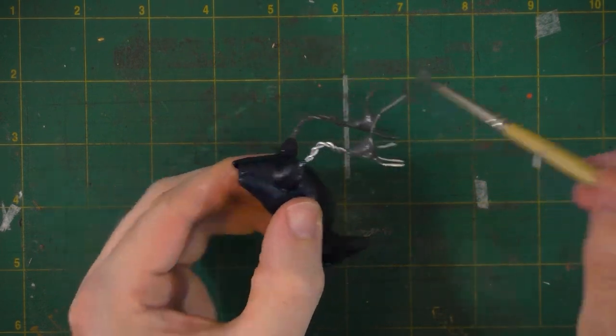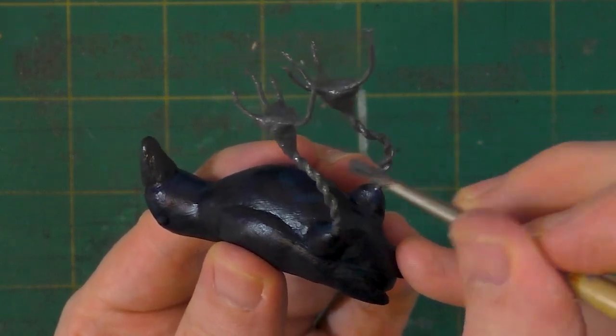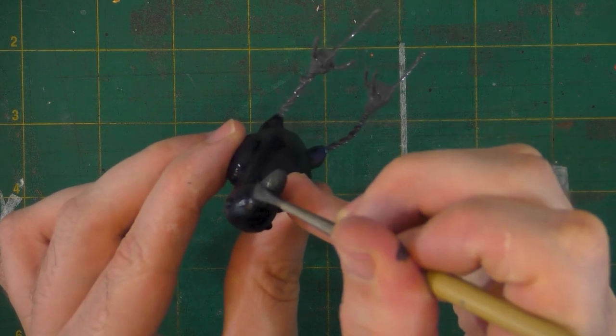Paint doesn't stick to armature wire that well, so if it's really important to you that the legs don't show any of the wire through, you can coat it with a few layers of something like mod podge, crystal clear, or a thin layer of resin epoxy to give the paint something to adhere to.